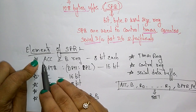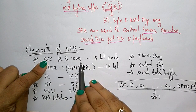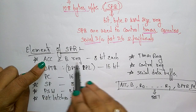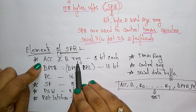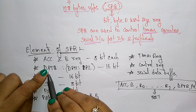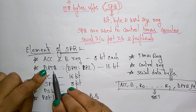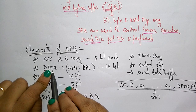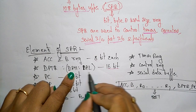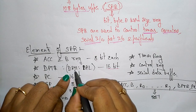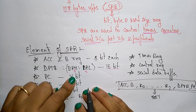The elements of special function registers include the accumulator and B register, each 8-bit in size. There is also the data pointer register, which is a 16-bit register acting as a higher-order 8-bit and lower-order 8-bit pair.